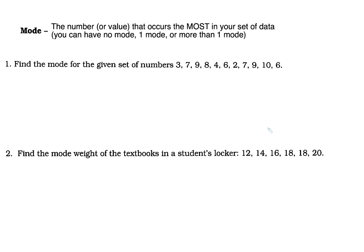Mode is easy to find — it's the number that occurs the most. One thing you must know about mode: you can have no mode, you can have one mode, or you can have more than one mode. However, you can only have one mean and one median. The mode can be none, one, or many.